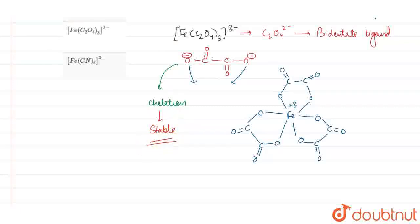Now, we have our last complex. The last complex is Fe(CN)6^4-. The ligand here is CN^-, and this is a monodentate ligand.